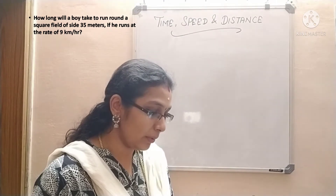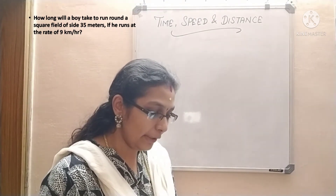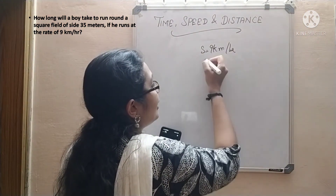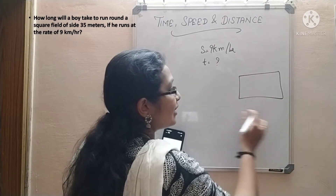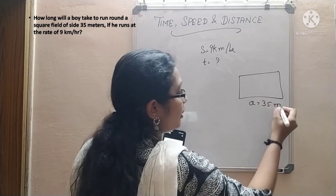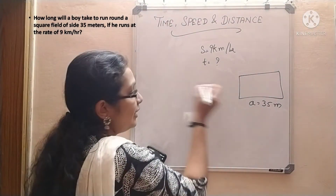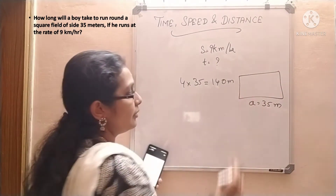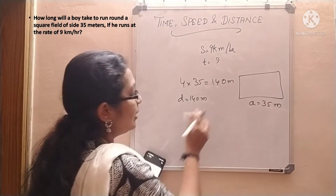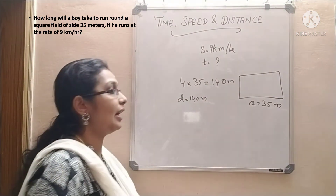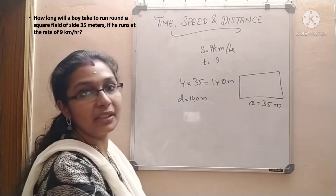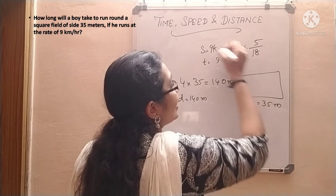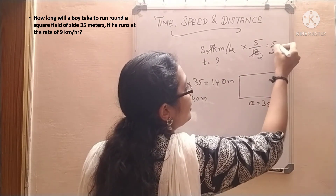Next question. How long will a boy take to run around a square field of side 35 meters if he runs at the rate of 9 kilometer per hour? Speed is given as 9 km/h and we need to find time. To complete the square he must cover all 4 sides: 4 × 35 = 140 meters. Now, speed is in km/h but distance is in meters, so convert 9 km/h to m/s by multiplying by 5/18: 9 × (5/18) = 5/2 meter per second.